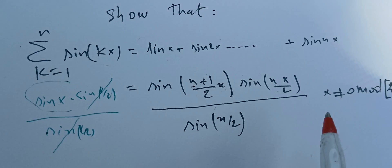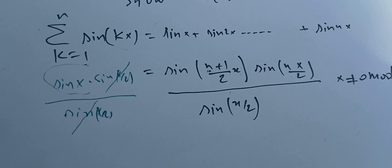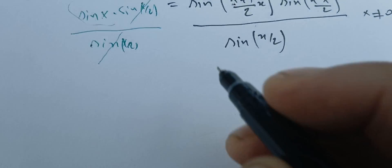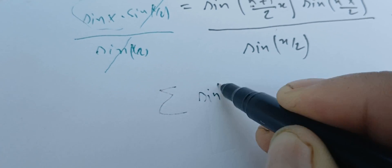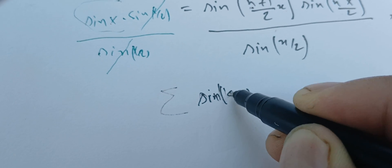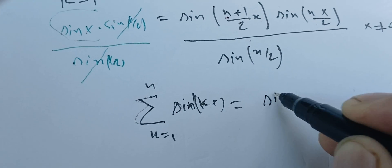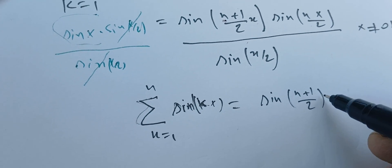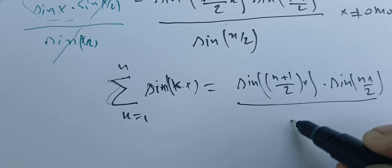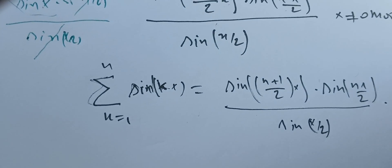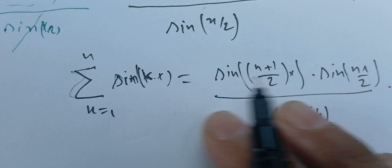Now we assume that it's true for k equals n and we want to prove that it's true for n plus 1. We start from our induction hypothesis, assuming that the sum equals sine of (n+1)/2 times x times sine of nx/2, everything over sine of x/2. We assume this and want to prove the result true for n plus 1.